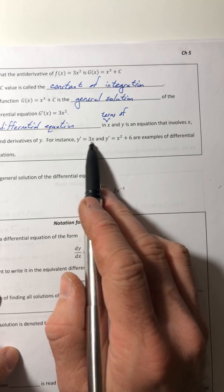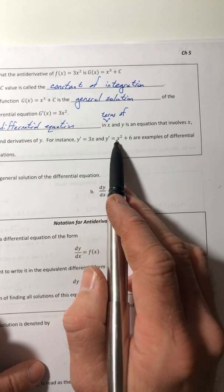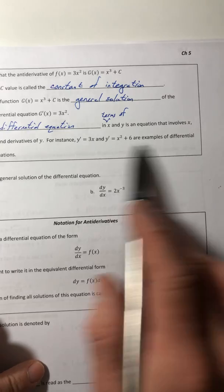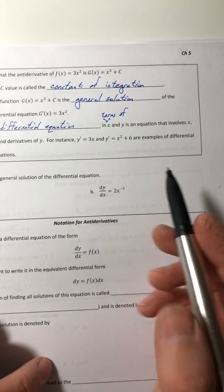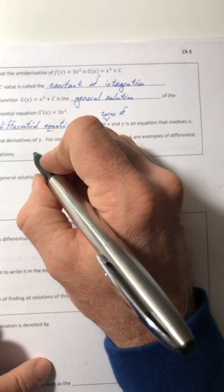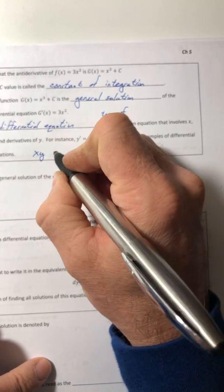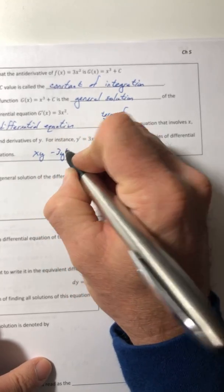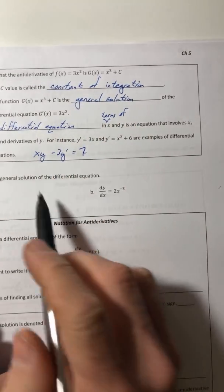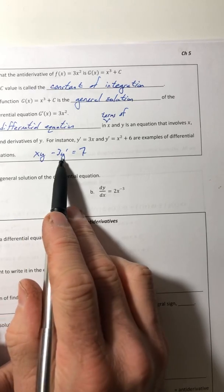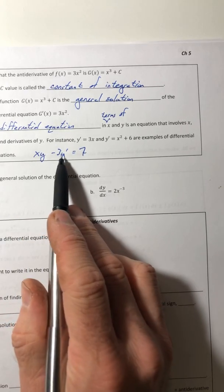So for instance, y prime equals 3x, y prime equals x squared plus 6. Those are all different types of differential equations. So you could even do x, y minus 3y prime is equal to 7. That's another one. You've got x and y running around, as well as the derivative of y.